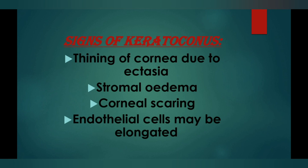In this session we will learn about the signs of keratoconus, which are related to the cornea only. The first sign is thinning of the cornea due to ectasia — I have discussed ectasia in a previous session. There is also stromal edema, where the stroma layer has edema, corneal scarring, and the endothelial cells of the cornea may be elongated.